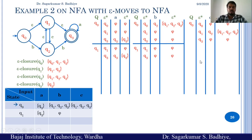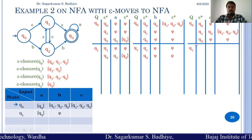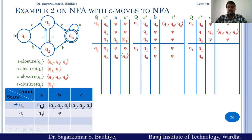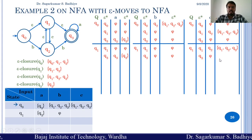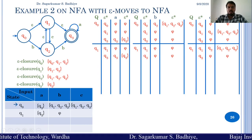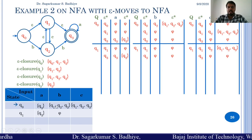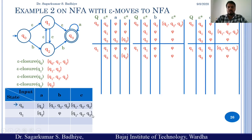Now Q1 on C: epsilon closure of Q1 is Q1, Q3. Q1 on C goes to Q2, and epsilon closure of Q2 is Q1, Q2, Q3. Q3 on C goes to phi and epsilon closure of phi is phi. So Q1 on C goes to either of the states Q1, Q2, and Q3 in the equivalent NFA.